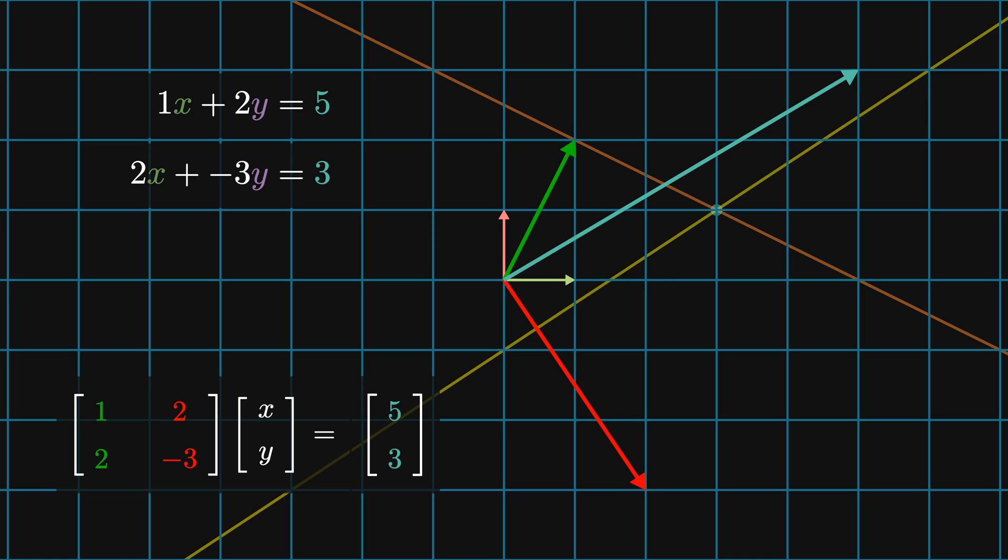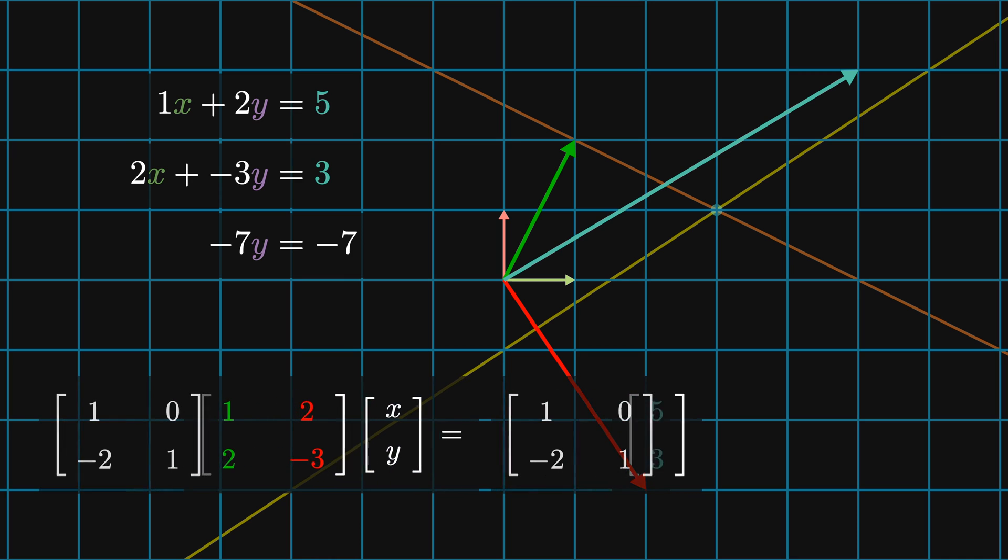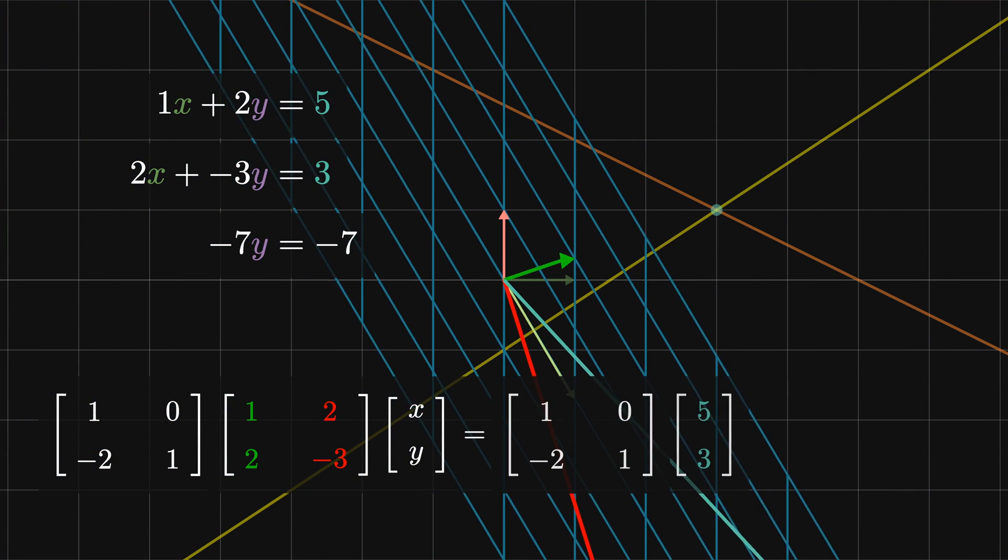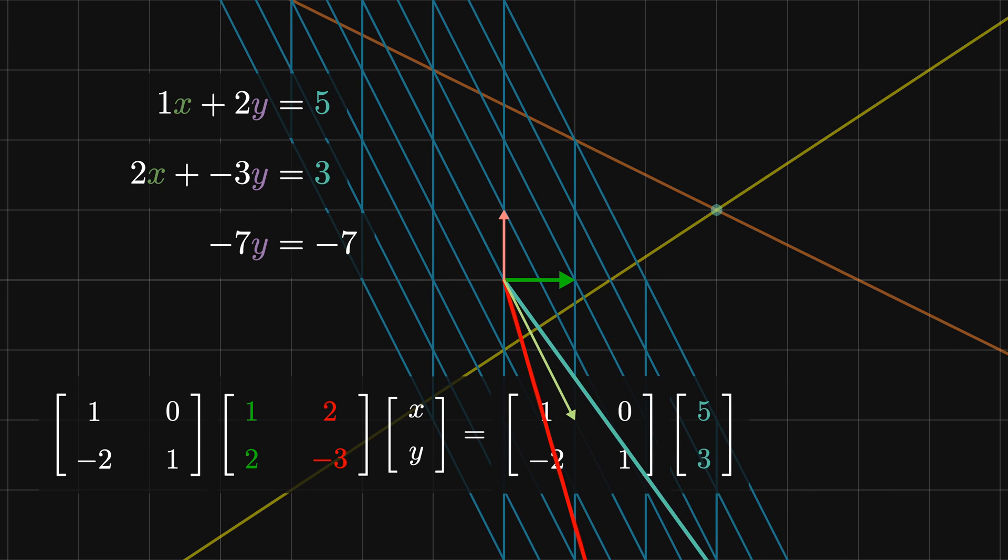First off, we want to eliminate the x term from the second linear equation. We can do this by multiplying the first equation by minus 2 and adding that to the second equation. This gives us a new equation -7y equals -7. In terms of matrices, this corresponds to the matrix [1, 0; -2, 1] acting on both sides of our matrix equation. This transforms our x vector to [1, 0] and our y vector to [2, -7].